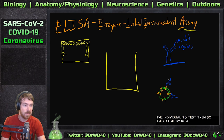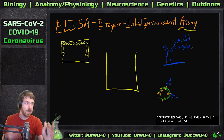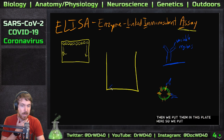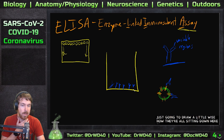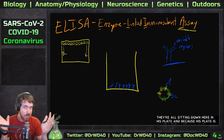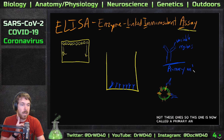One thing we can do is take a blood sample from the individual to test them. We take a serum sample, spin it out, and isolate the antibody fraction by weight. We then put these antibodies into the plate — I'll draw little Y's — and because the plate is plastic, the antibodies actually stick to it.